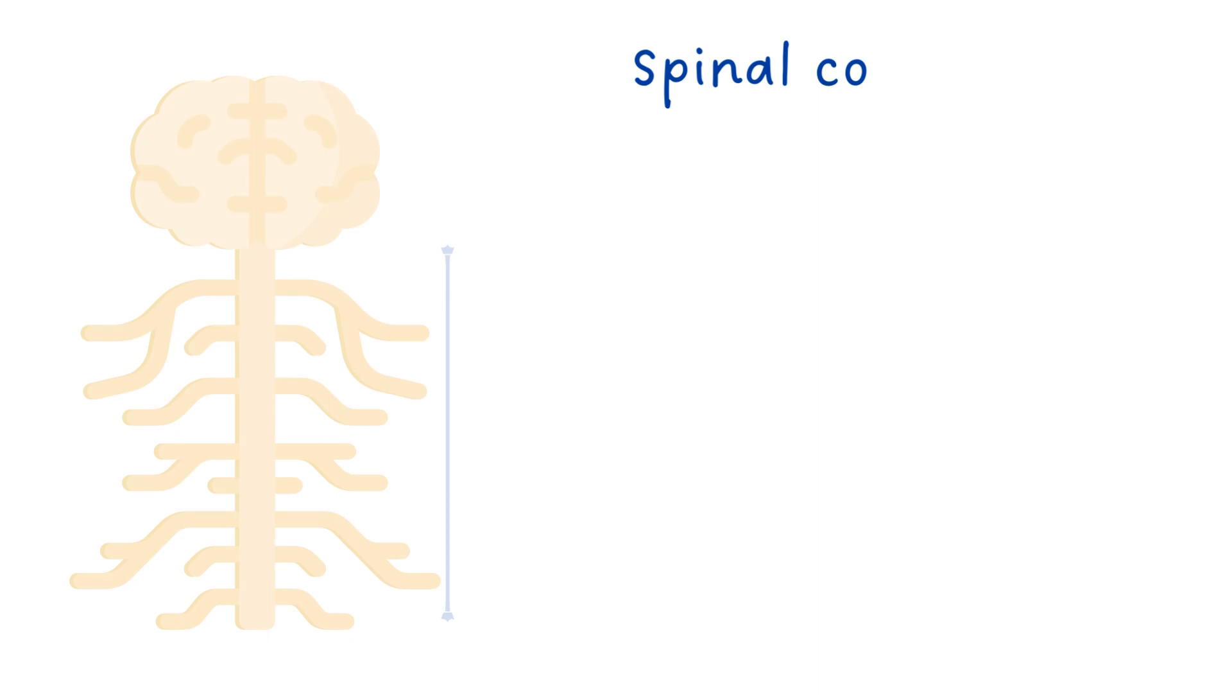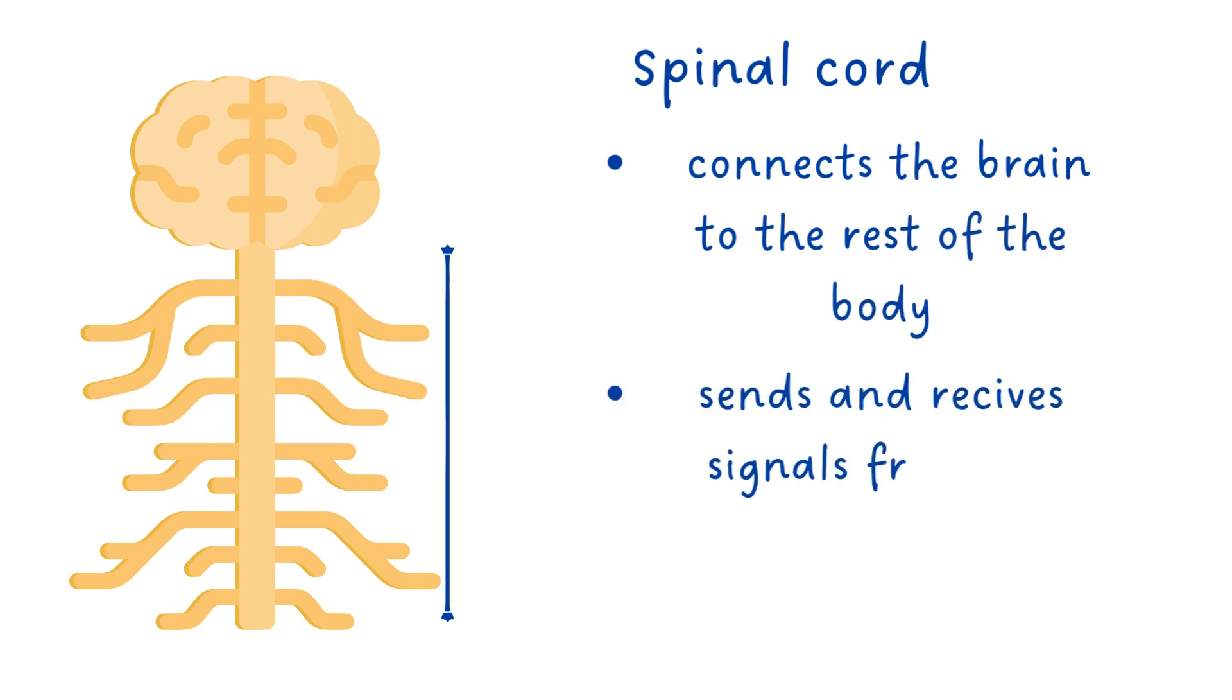The spinal cord is a long bundle of nerves that runs down the back. It connects the brain to the rest of the body and allows the brain to send and receive signals from the peripheral nervous system.